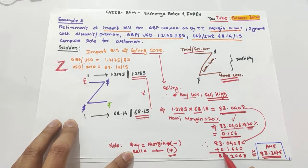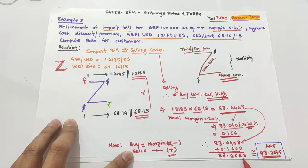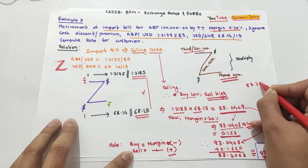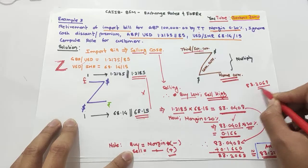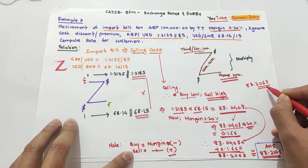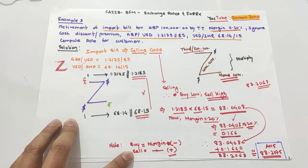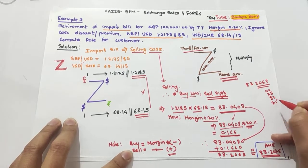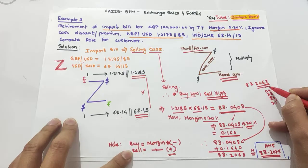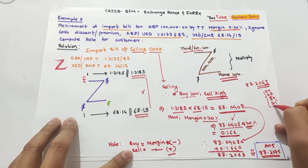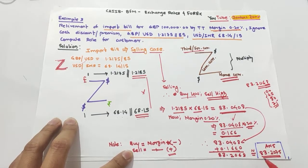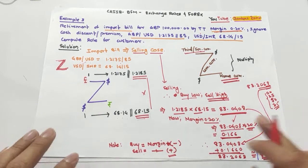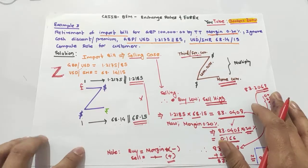After adding the margin we get 83.2068. For rounding off, we consider four decimal places. The rounding-off rules use benchmarks: 0, 25, 50, and 75. The last two digits '68' are nearest to 75, so the rounded rate is 83.2075. This is a very easy example — just remember the Z method.